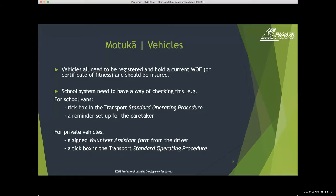For private vehicles, it's about setting up a system where you're getting information from your volunteer drivers. You can use the volunteer assistant form to do that — the volunteer signs to confirm their vehicle will have a current warrant of fitness and is registered. On your documentation, the teacher in charge can have a tick box confirming they've checked that off. It's definitely caused embarrassment for some teachers who've driven off school grounds without a current warrant, so it's always worth checking.